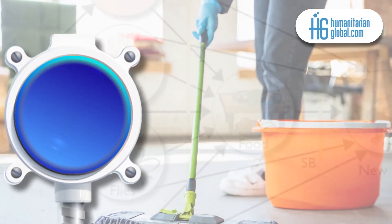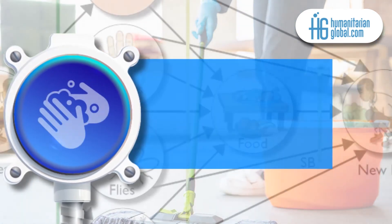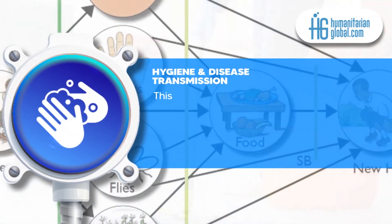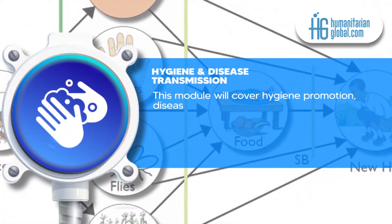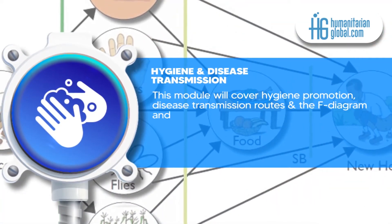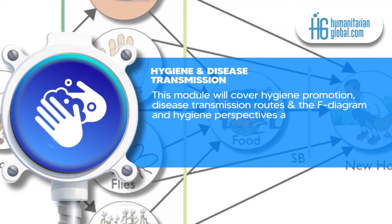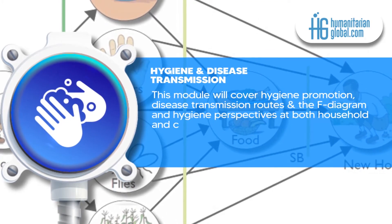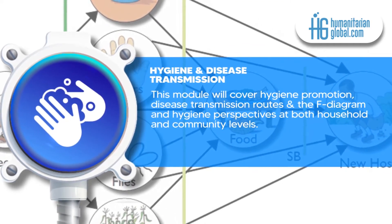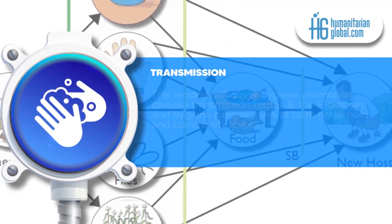In the next module, you learn more about hygiene and disease transmission. This module will cover hygiene promotion, disease transmission routes and the F diagram and hygiene perspectives at both household and community levels.